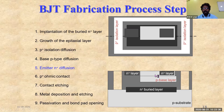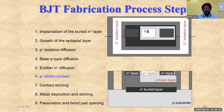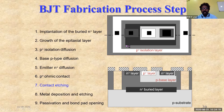Upon the P-base, the emitter N+ diffusion is created by depositing N-type impurities to form the N+ emitter layer. After the emitter, a P+ ohmic contact is created between the P-base and the P+ impurities, filling in to form the next layer. Then contact etching is performed across all three regions.